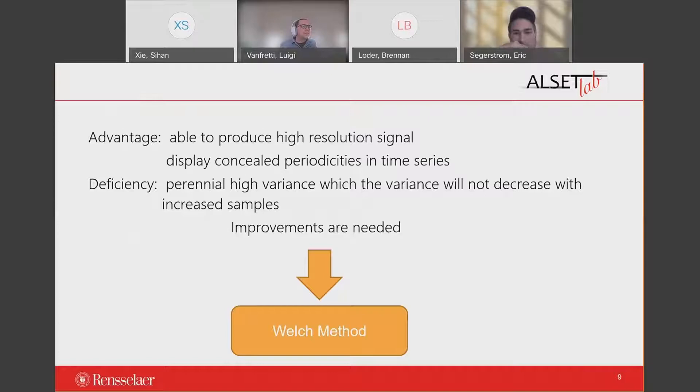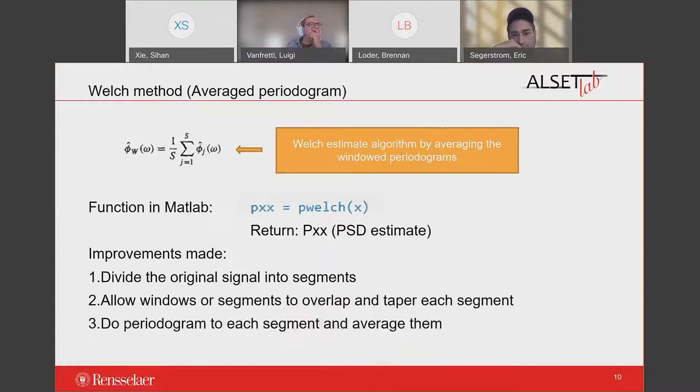In one aspect, using these estimators for long data lengths is able to produce high resolution signal and can manifest hidden periodicity in time series. But they also have defects of non-stationary high variance, and the variance will not decrease with increased samples. So improvement is needed to decrease the variance, and this method is the Welch method.